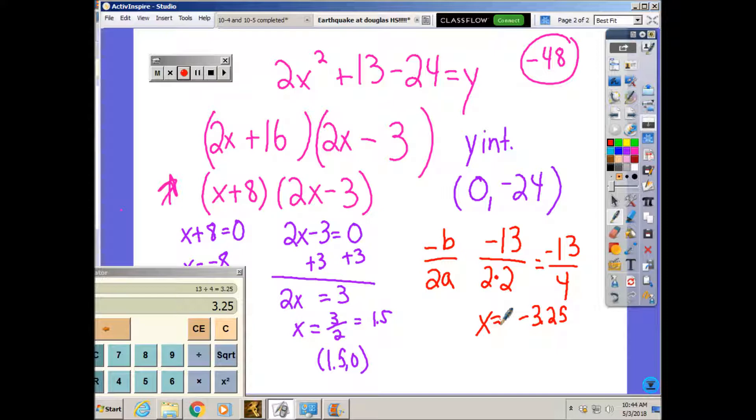And I'm going to do it up here. The vertex is the axis of symmetry plugged in. So you're going to do 2 times negative 3.25 squared. Plus, there should have been an x here, 13 times negative 3.25. Minus 24. Again, I've been saying in class to use your calculator.